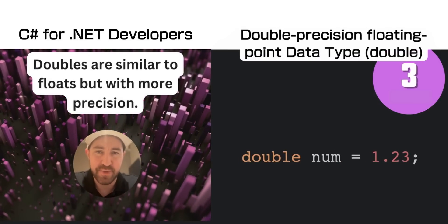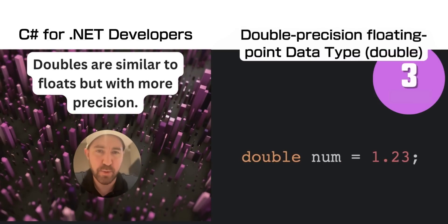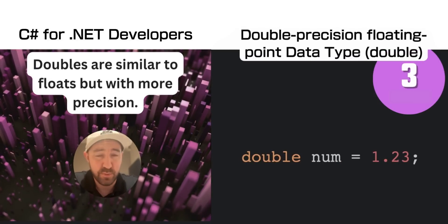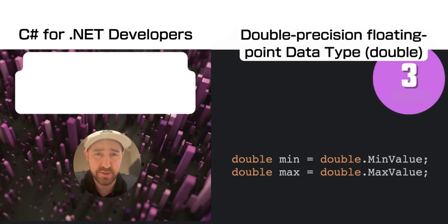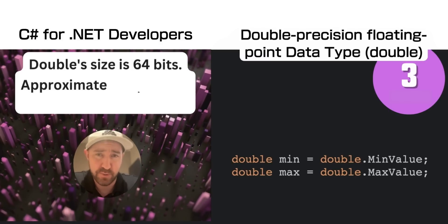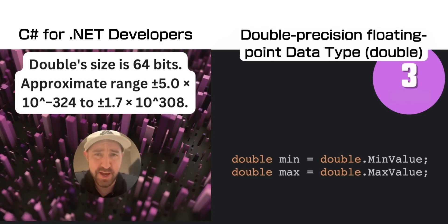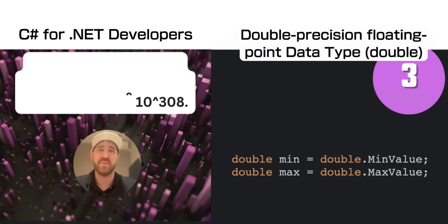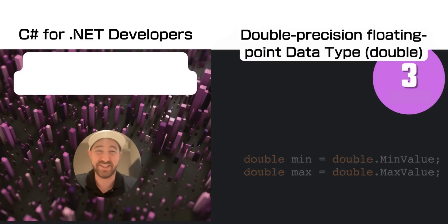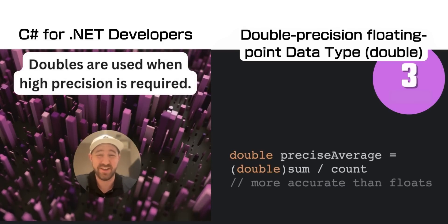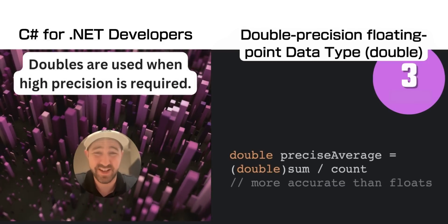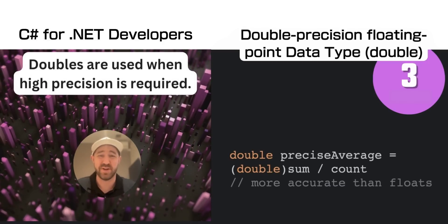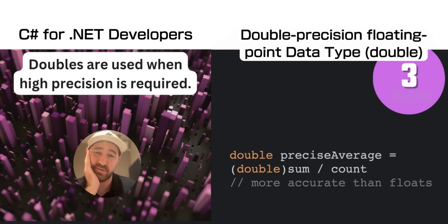Our next data type is the double precision floating data type, or a double, which is very similar to a float but far more accurate. It uses 64 bits of memory, so it can get extremely large. You normally use this when extremely high precision is required.